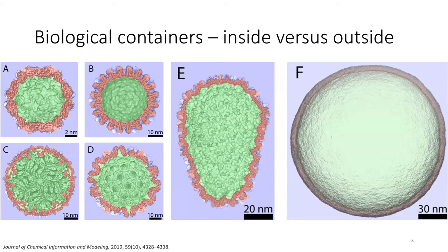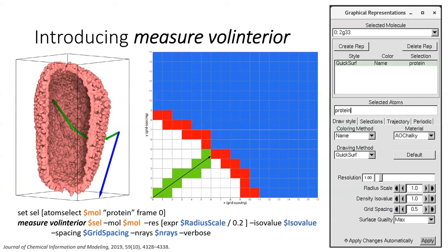We were interested in answering questions like: for all this water and ions in the system, are they moving in and out of the capsid? Can we track these rates of solvent exchange? In order to do that, what we needed was a mechanism for allowing the computer to detect what is meant by inside versus outside of a container. As humans, that's really obvious to us, but there wasn't a great way to teach a computer how to do this — not only to detect inside versus outside, but to do it in a way that was incredibly high performance so we could apply it to systems with millions, tens of millions, even hundreds of millions of particles. And so the measurable interior method was born.